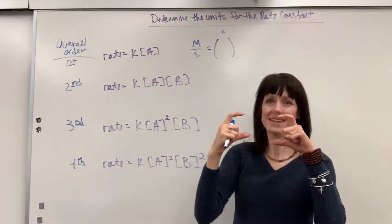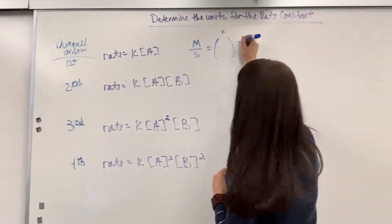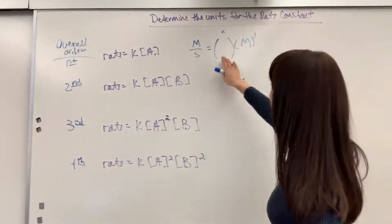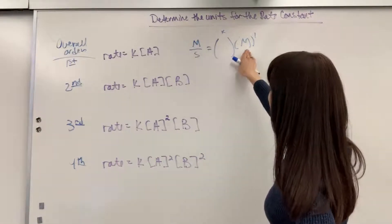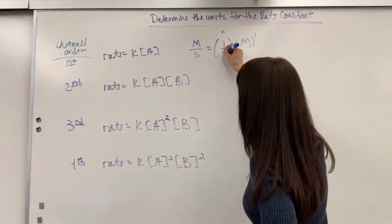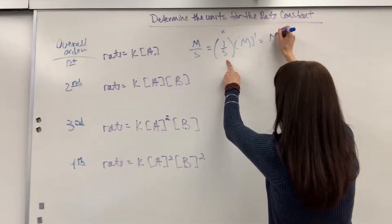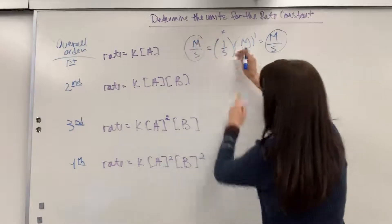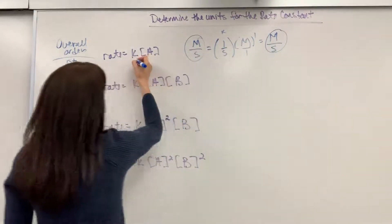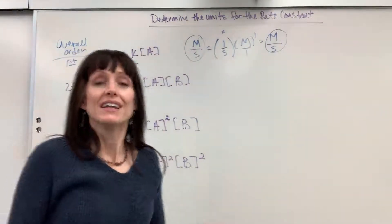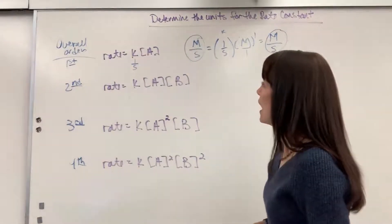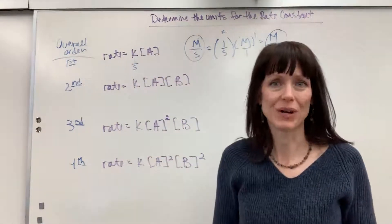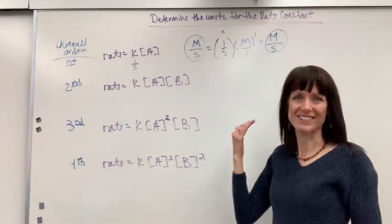For a first order reaction, molarity per second equals K's unit times molarity to the first. What do I need? I need 1 over second, because 1 times molarity gives molarity, and second on the bottom gives molarity per second. So for first order, K has units of 1 over second — per second. A cool connection: all nuclear decay is first order, which is why the decay constant K is always per second.